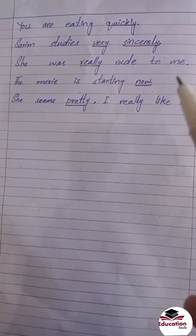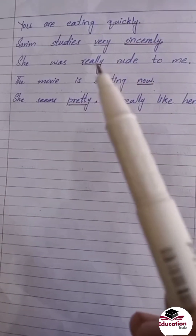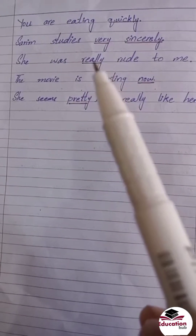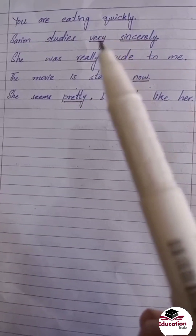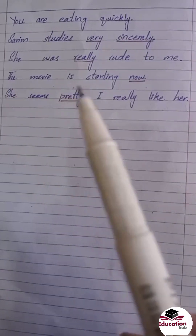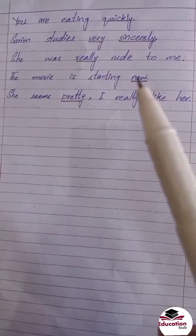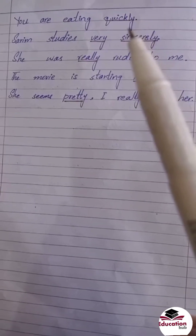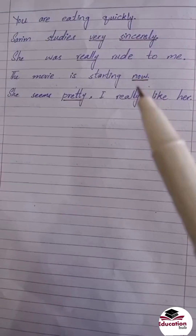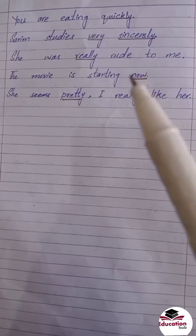Next sentence: 'She was really rude to me' — وہ سچ میں میرے ساتھ بے ادب تھی۔ یہاں rude adjective ہے اور really adjective کے بارے میں بتاتا ہے۔ really، quickly، very، sincerely — یہ سب Adverb ہیں۔ Next: 'The movie is starting now' — movie اب start ہو رہی ہے۔ now یہاں Adverb ہے۔ ضروری نہیں کہ ہر Adverb کے آخر میں 'ly' آئے — اور بھی بہت سارے Adverb ہیں جو verb، adjective اور Adverb کے بارے میں بتاتے ہیں۔